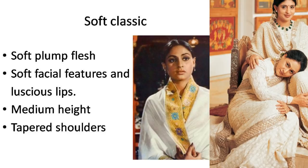Next is Soft Classic. Your body flesh is very soft and plump. Medium height. Facial features are very soft with luscious lips. Your shoulders are tapered — slightly narrowing toward the ends.